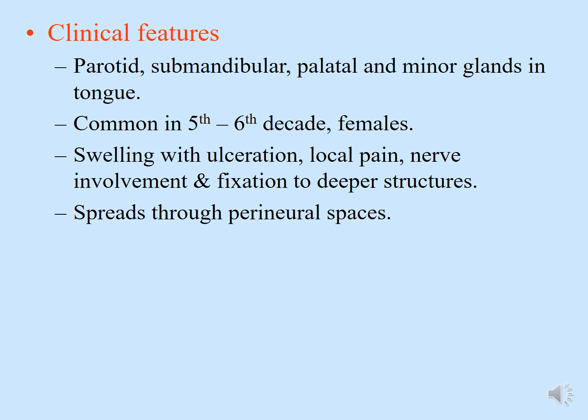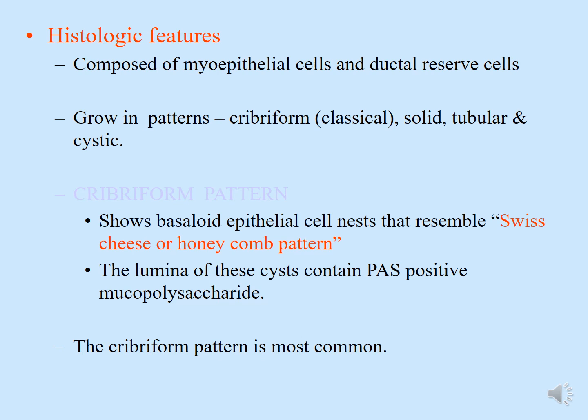Clinical features: patients usually present with swelling or masses and may have numbness, paresthesia, or pain. Common sites include the parotid, submandibular, palatal minor salivary glands, and tongue. It commonly affects the fifth to sixth decades, with females more commonly affected. Patients may present with swelling with ulceration, local pain, nerve involvement, and fixation to deeper structures. This tumor has an affinity for nerve fibers and invades nerves, spreading through perineural spaces — which is why the prognosis is poor.